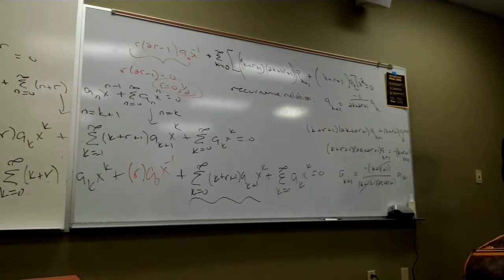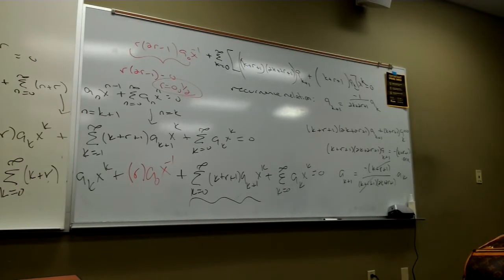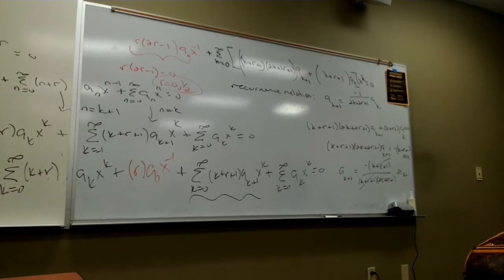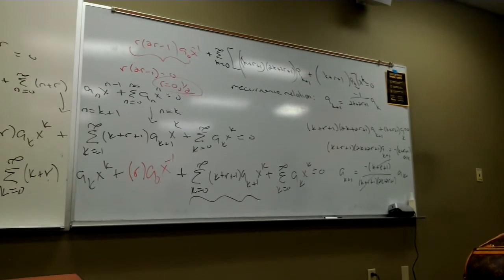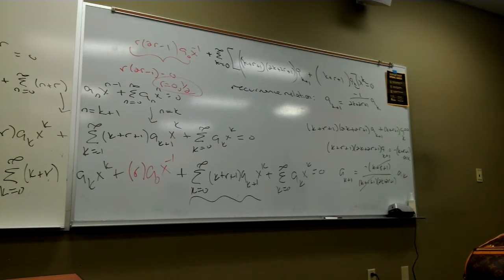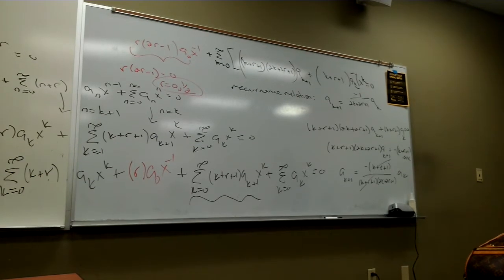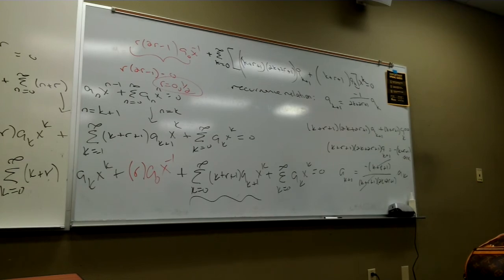So for this method, to figure out the two linear solutions, we look at the term hanging out front — the indicial equation. Both solutions depend on which value of R we choose. Depending on which value of R I choose, the recurrence relation is going to change. Which means — thank goodness — for a second-order DE, I'll get two independent solutions.